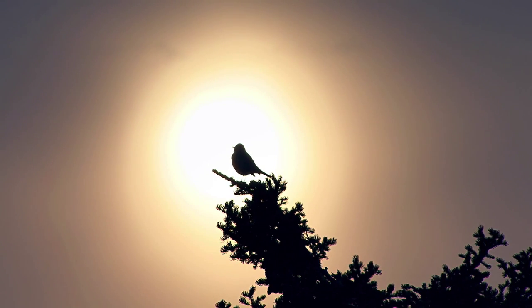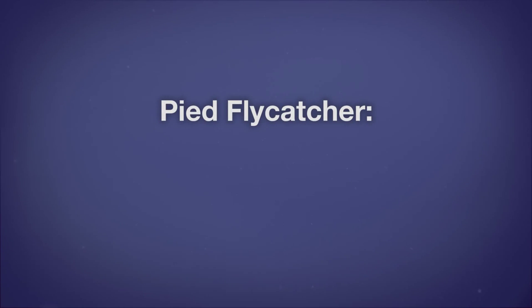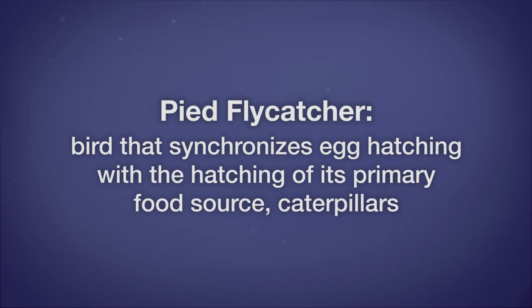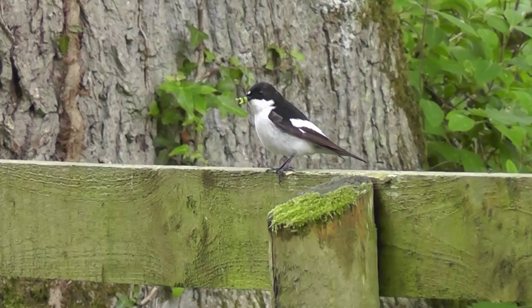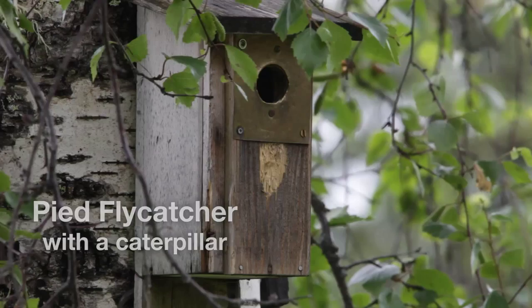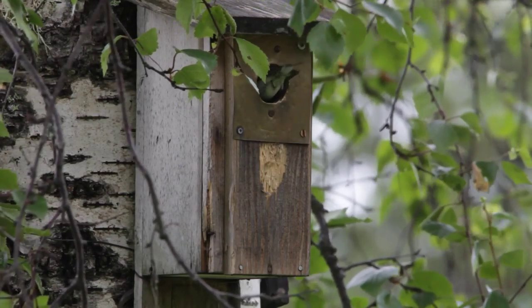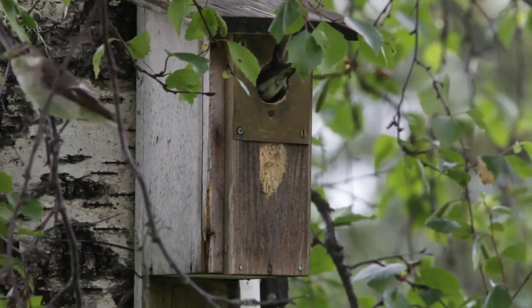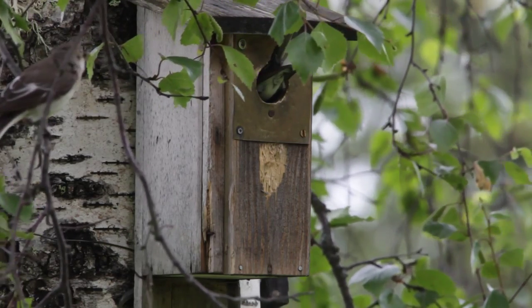Consider the issue of annual synchronization and the pied flycatcher. This bird's young feed primarily on caterpillars. Over time, the flycatcher evolved to lay eggs that would hatch at about the same time the caterpillars were hatching, so the young would be growing during an abundant food source. Due to warmer global temperatures, tree leaf out and the subsequent hatching of caterpillars has occurred about two weeks earlier than previously. However, the timing of flycatcher hatching has not changed.